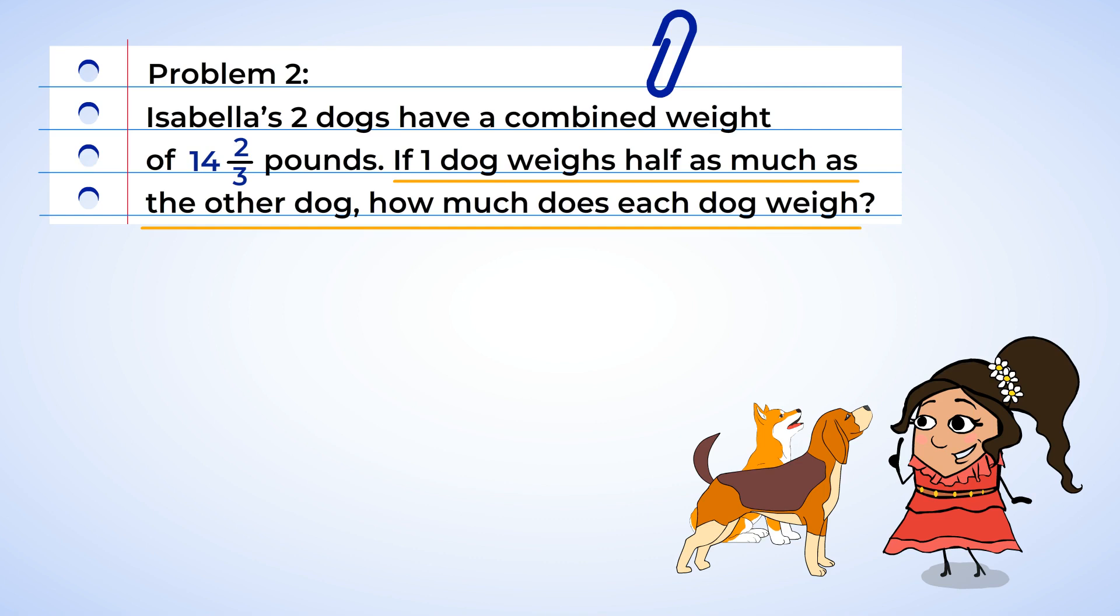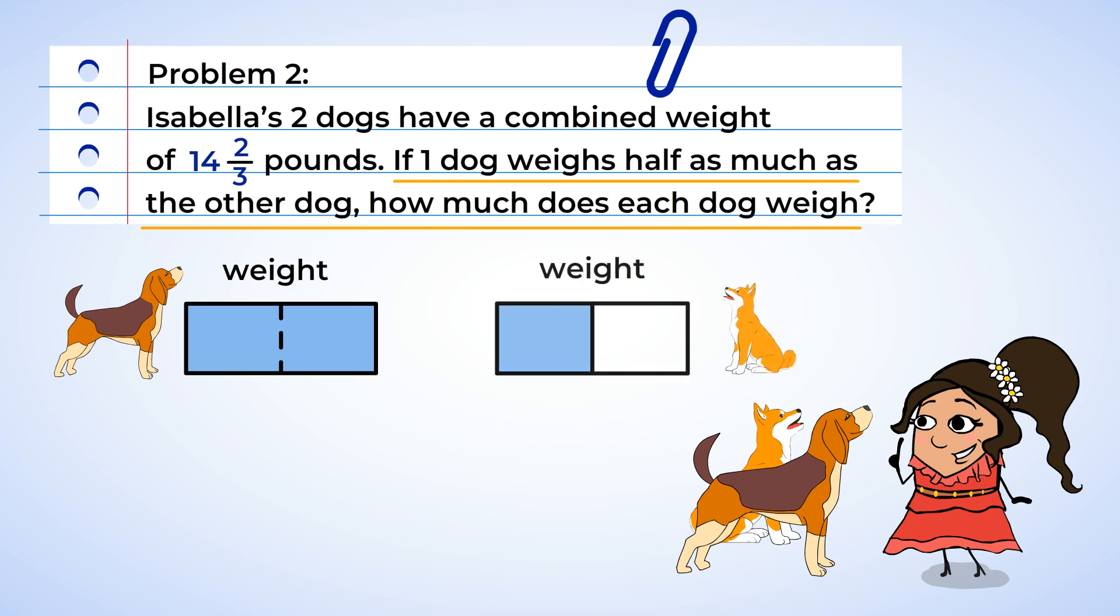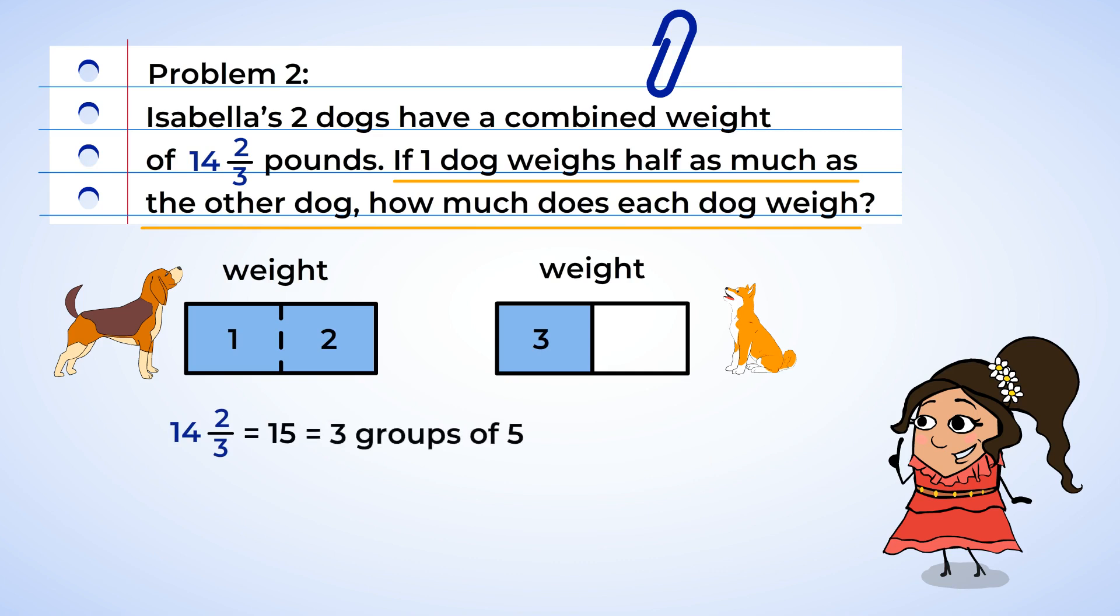I bet we can help Isabella find out how much each dog weighs. Let's see. If one dog weighs a certain amount, represented by this box, well then the other would weigh half the amount. So we can split this box in half, and create another box that's the same size. And it looks like we have three parts here. 14 and two-thirds is really close to 15. 15 can be divided into three equal groups of 5, and that would mean that one dog would weigh about 5 pounds, and the other dog would weigh about 10 pounds. Good, but that's just an estimation.